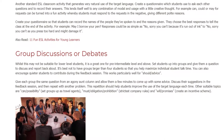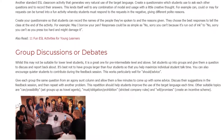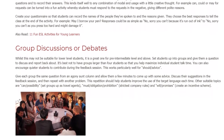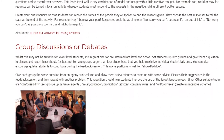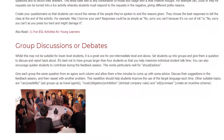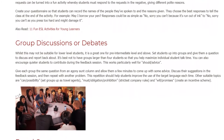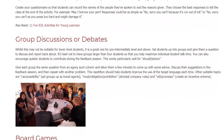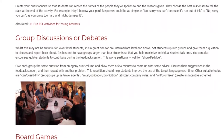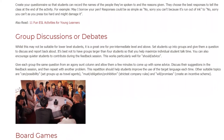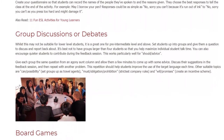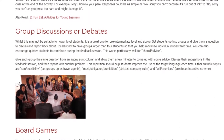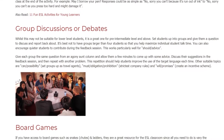This repetition should help students improve the use of the target language each time. Other suitable topics are: can/possibility — set groups up as travel agents; must/obligation/prohibition — strictest company rules; and will/promises — create an incentive scheme.